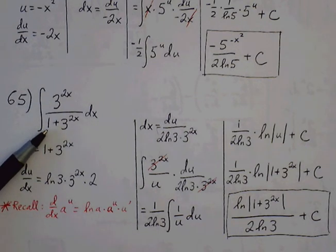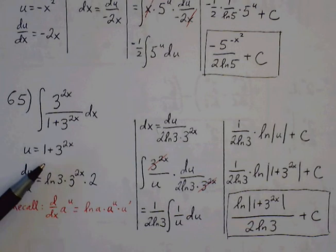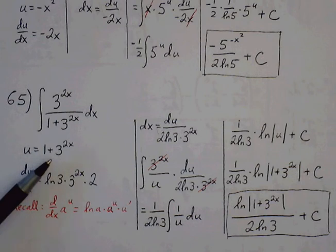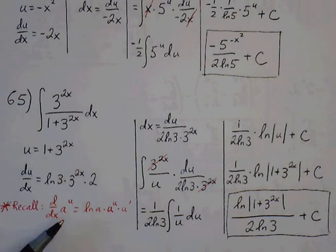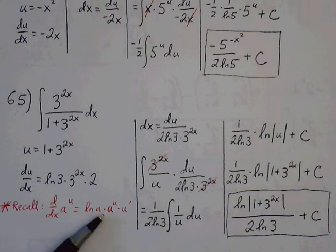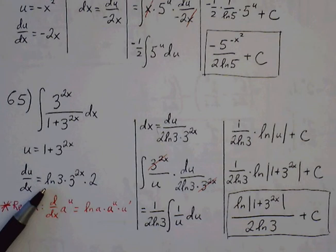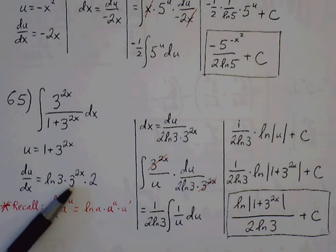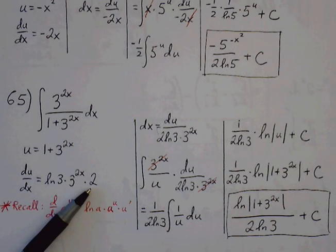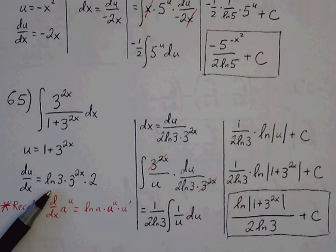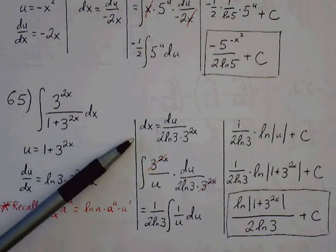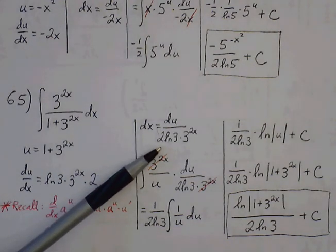Let's try with the u value being the denominator: 1 plus 3 to the 2x. The derivative — 1 goes to 0, so for 3 to the 2x, recall the derivative rule for a to the u, which is natural log of a times a to the u times u prime. So natural log of 3 times 3 to the 2x times 2. Solve for dx: dx equals du over 2 natural log of 3 times 3 to the 2x.